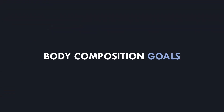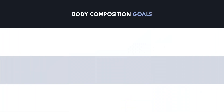Before exploring how to assess body composition, we first need to understand why trainees want to change body composition in the first place. Those performing resistance training generally want to improve their body composition for the purpose of looking more aesthetic and also for general health and function. Some trainees also lift for specific sports like weightlifting or powerlifting, and some lift for transfer to athletic performance for field and court sports. However, these goals are unique to sport performance and aren't really to do with body composition.